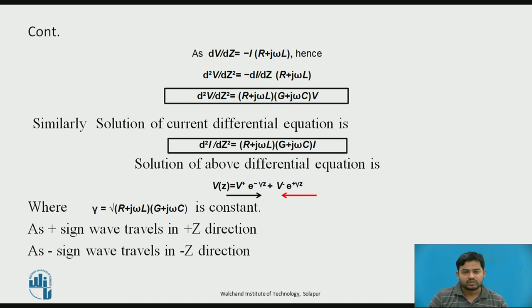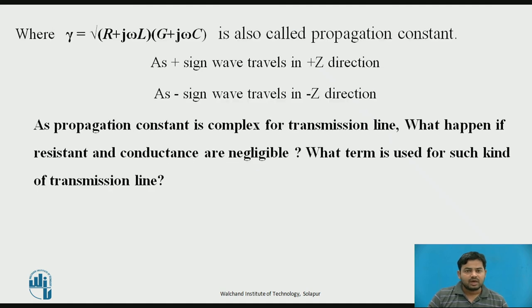The positive sign is for the positive z direction and negative for the negative z direction. The last term is the propagation constant. Think about what kind of transmission line results if resistance is zero and inductance is infinity — write the answer, and this will be covered in the next session on transmission lines.